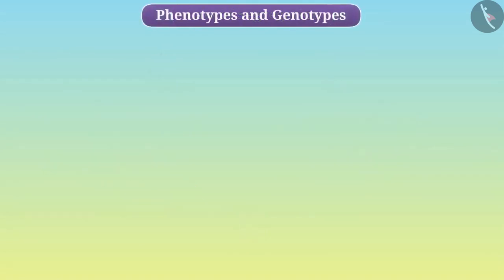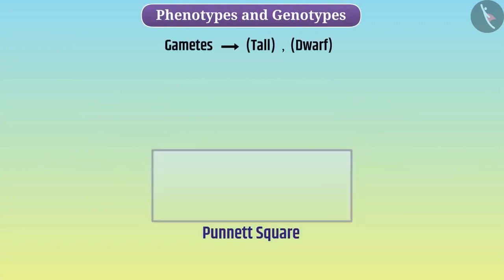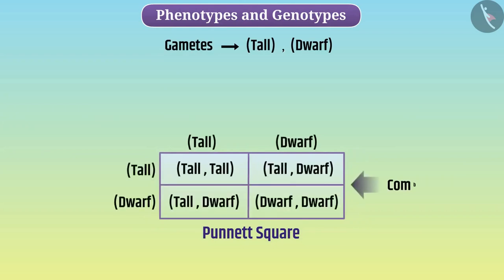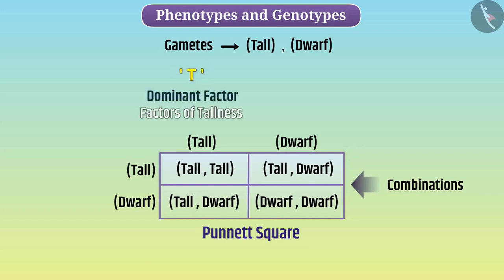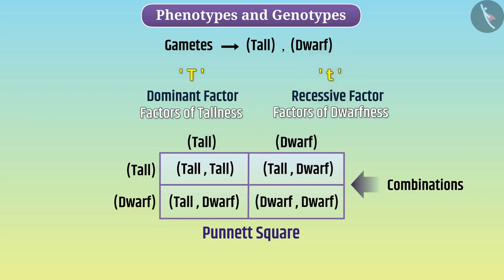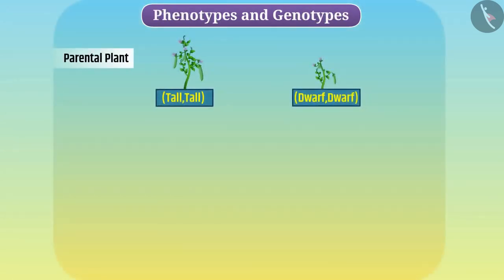Inheritance can be understood through the Punnett square. We arrange the male and female gametes vertically and horizontally and find the possible combinations. We represent the dominant factor with uppercase letters and recessive factor with lowercase letters. For example, tallness can be represented by uppercase T and dwarfness with a lowercase t. Since the parental generation plants are a pure lineage, we can express the factors of traits as TT or tt.